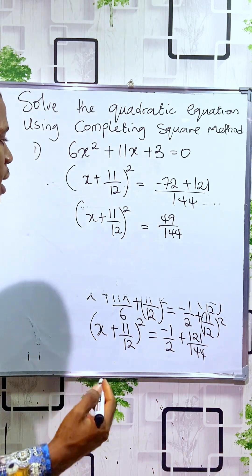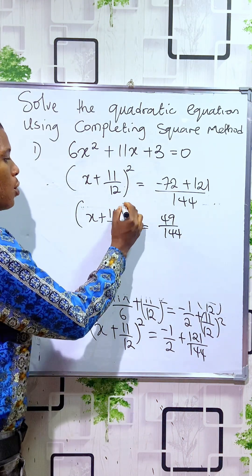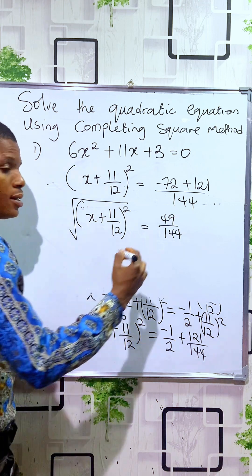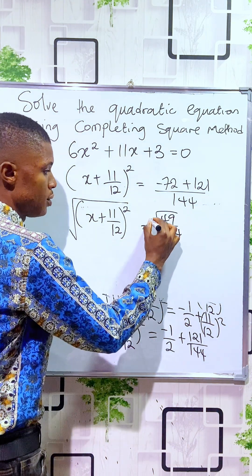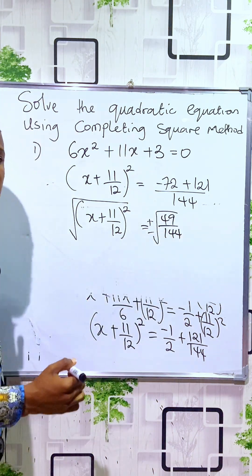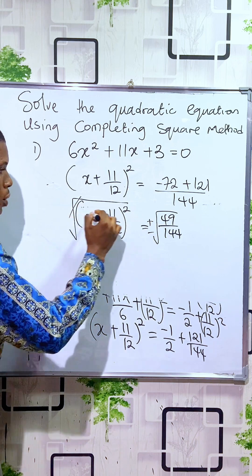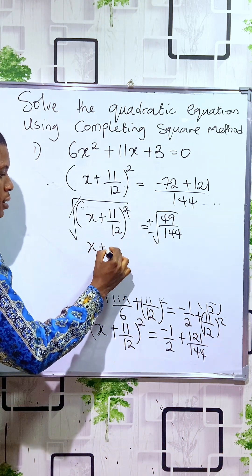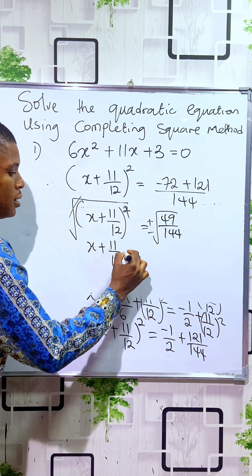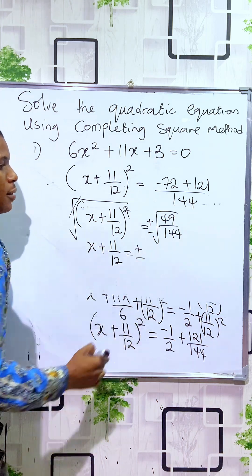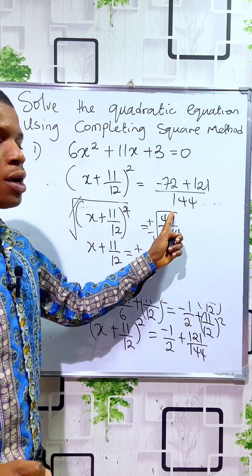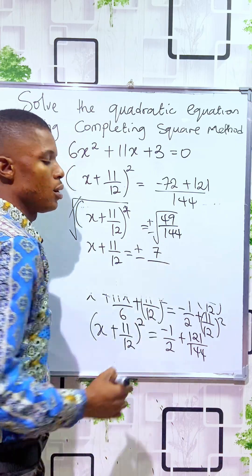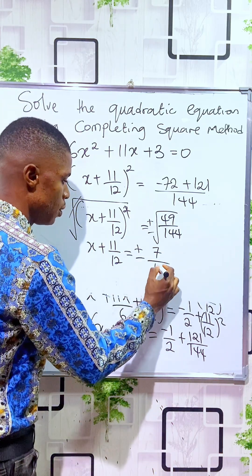The next thing, since we have a square on the left, we take the square root of both sides. Taking the square root of both sides gives a positive and a negative solution, and the square and square root cancel out. So x + 11/12 equals plus or minus the square root of 49/144. The square root of 49 is 7, and the square root of 144 is 12.